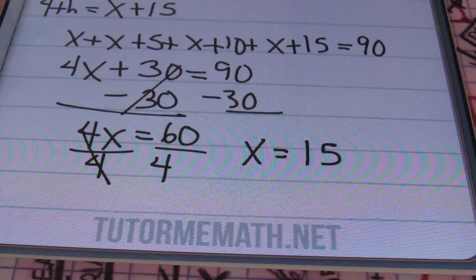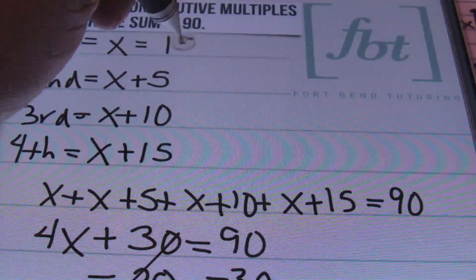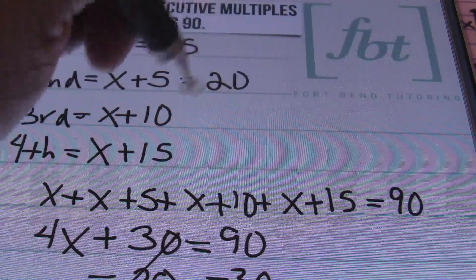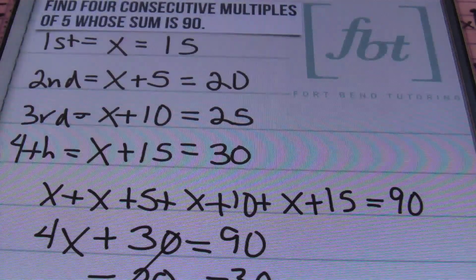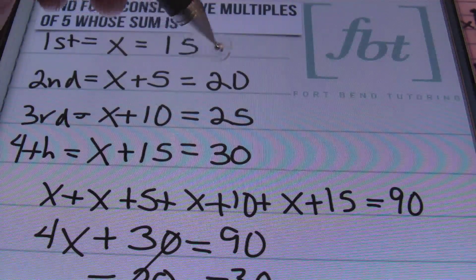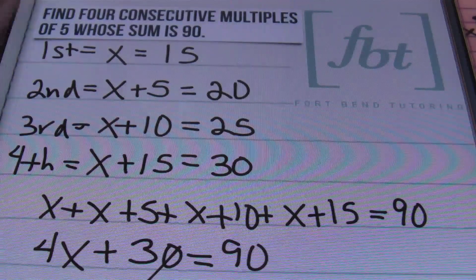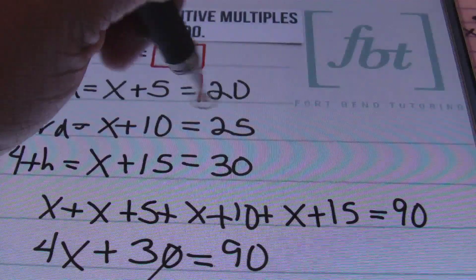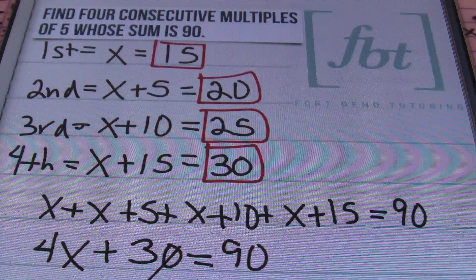So x equals 15, that's my first value. Going back to our definitions: if x is 15, the next consecutive multiple of 5 is 20, then 25, and finally 30. Adding to verify: 15 plus 20 is 35, 35 plus 25 is 60, and 60 plus 30 is 90. That confirms our solution is correct. The solution to this problem is 15, 20, 25, and 30.